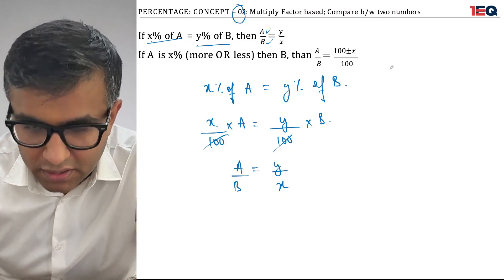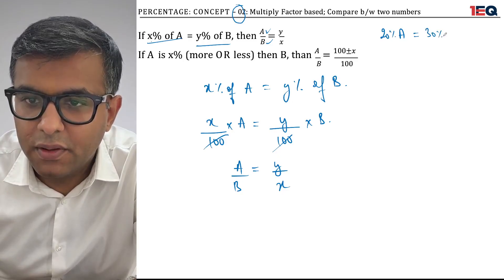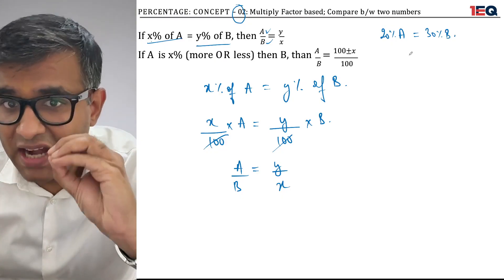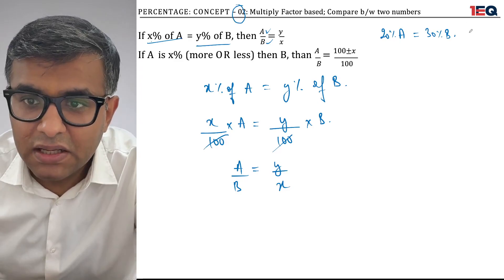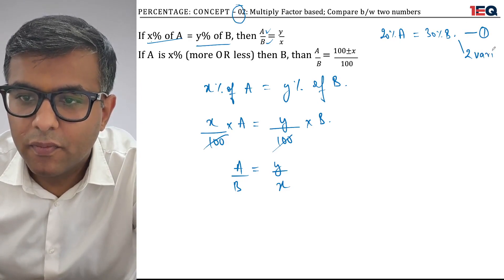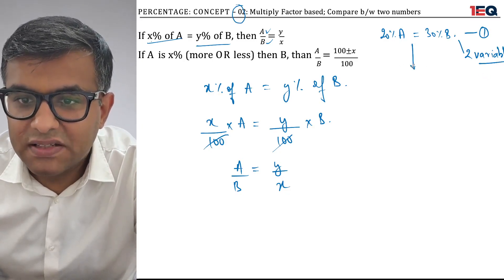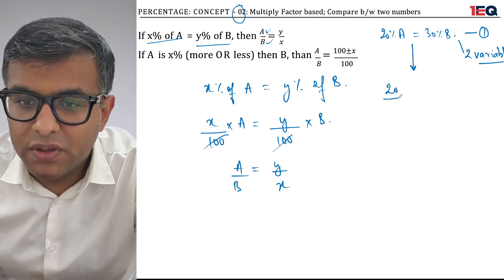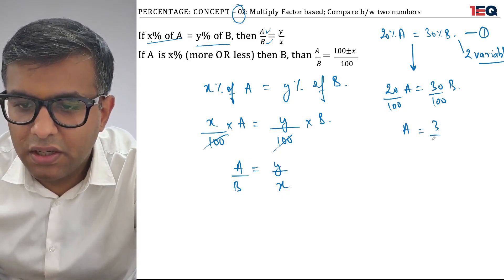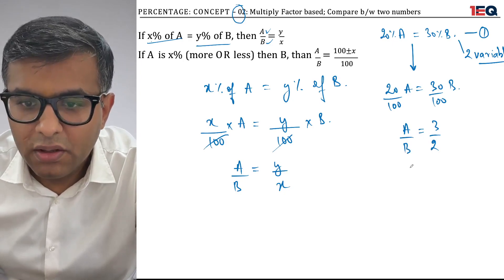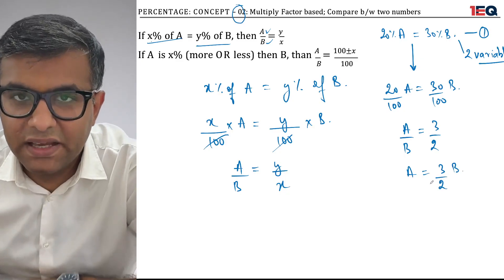For example, if 20 percent of A equals 30 percent of B, and somebody asks the exact absolute value of A — we will never be able to find it, because this is one equation with two variables. If they'd like a relationship between A and B, I remove the percentage signs and get A/B = 3/2, meaning A is one and a half times B.